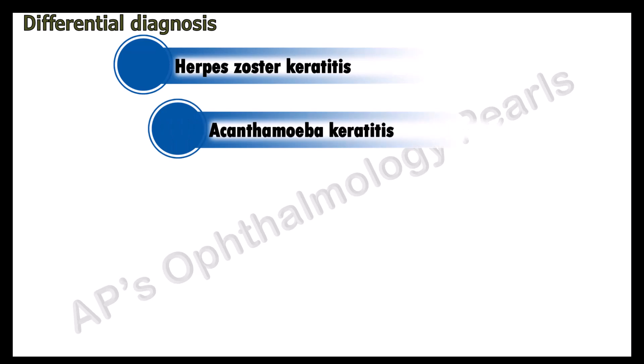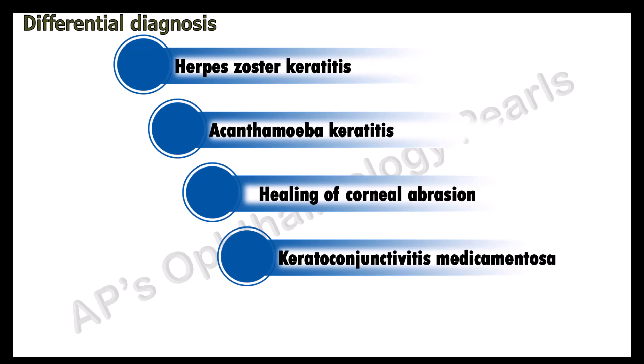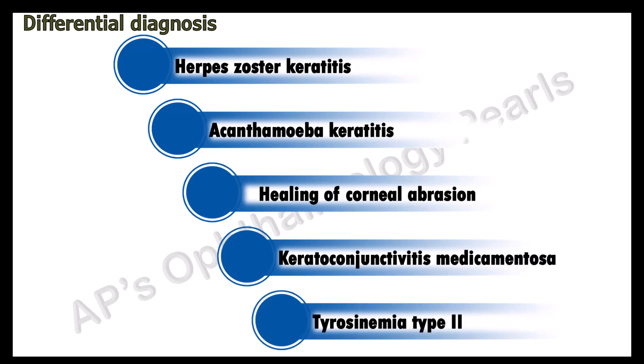Acanthamoeba keratitis may present similarly, with history of contact lens use, swimming in brackish water, and absence of response to antivirals. Healing of a corneal abrasion can also mimic a dendritic lesion. In keratoconjunctivitis medicamentosa there will be history of topical medication use, and very rarely tyrosinemia type 2, which presents with pseudodendritiform keratitis with hyperkeratotic lesions of palms and soles and mental retardation.